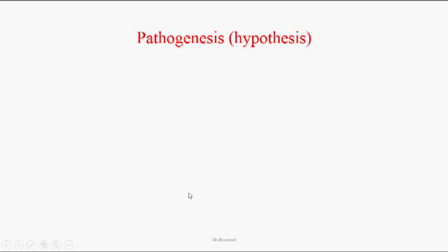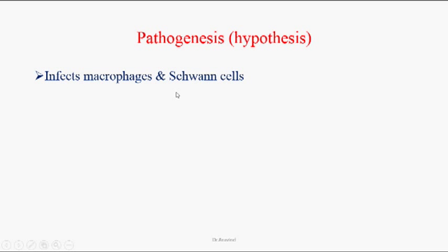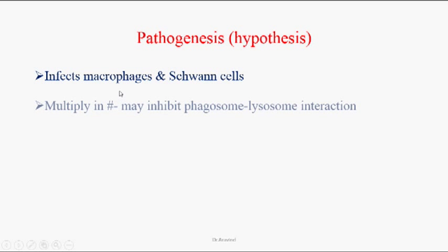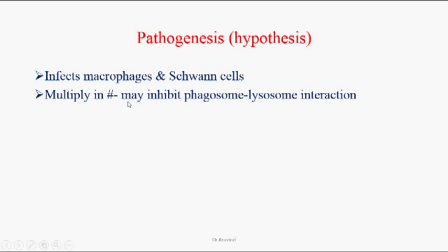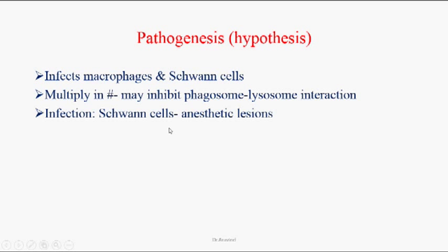Until now there is no exactly known pathogenesis — whatever is discussed in this lecture is just a hypothesis. These organisms can infect macrophages and Schwann cells, and they replicate inside these cells by inhibiting phagosome-lysosomal interaction. Whenever they infect Schwann cells, we can see anesthetic lesions.